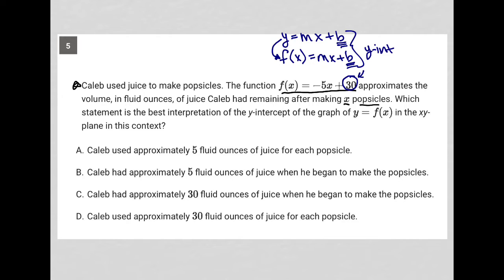So which statement is the best interpretation of the y-intercept? Well, what is our y-intercept? It's 30. So we knew that x represents popsicles. We know that the function is based upon approximating the volume of fluid ounces of juice Caleb had remaining, that's important, remaining after making x popsicles.